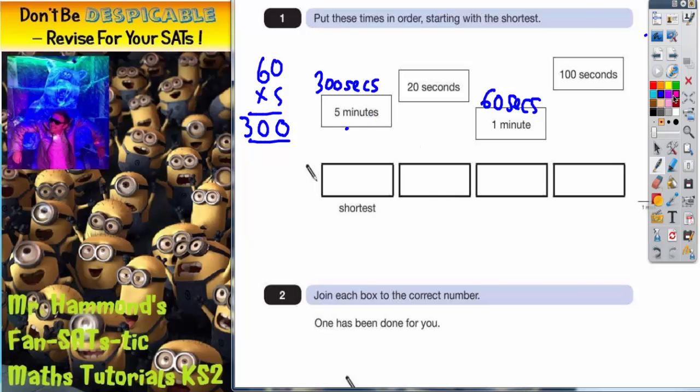The shortest one of the lot is going to be 20 seconds, so you've got 20 seconds - cross it off. Now we've got 60, 100, so 60 is the next one.